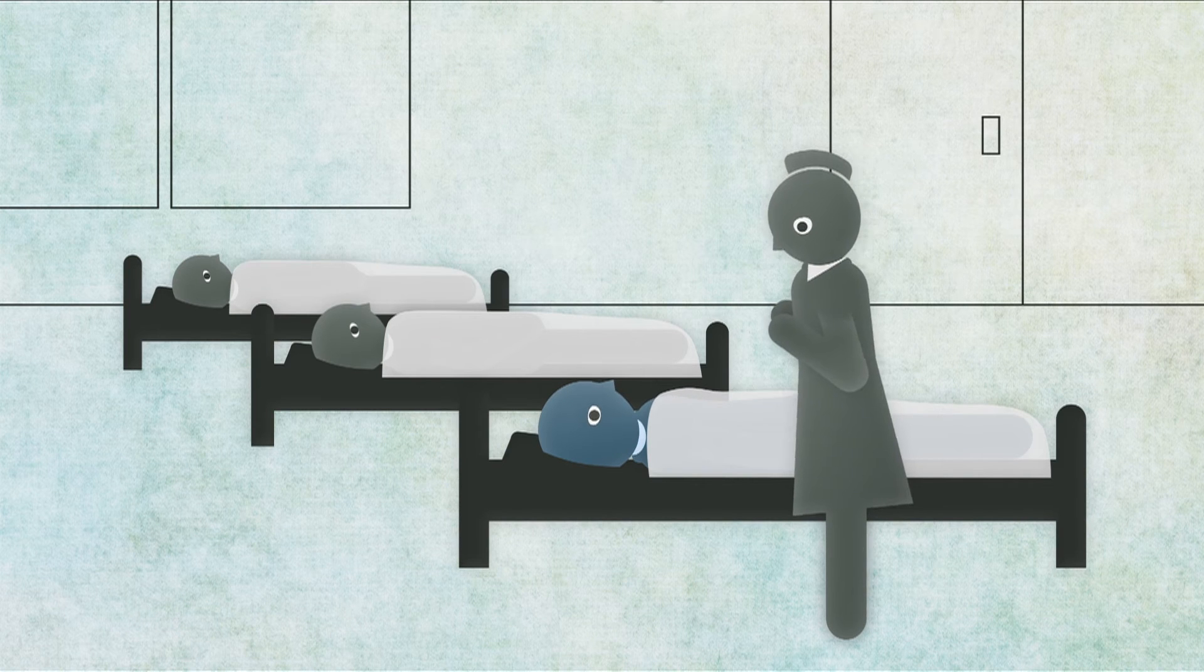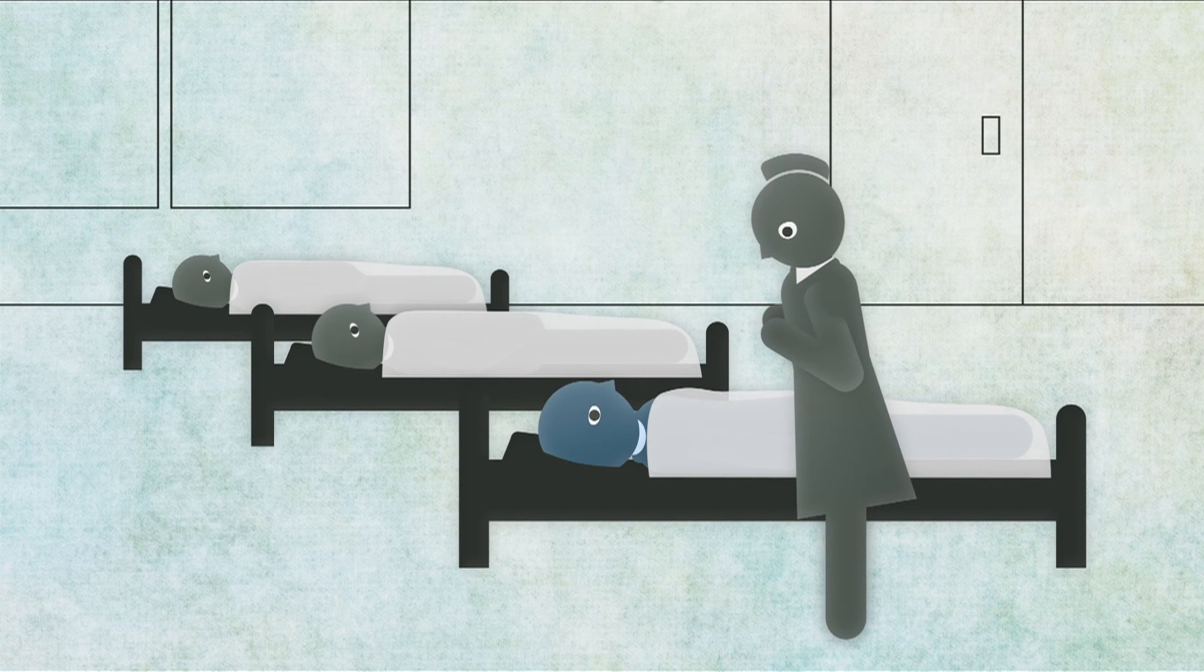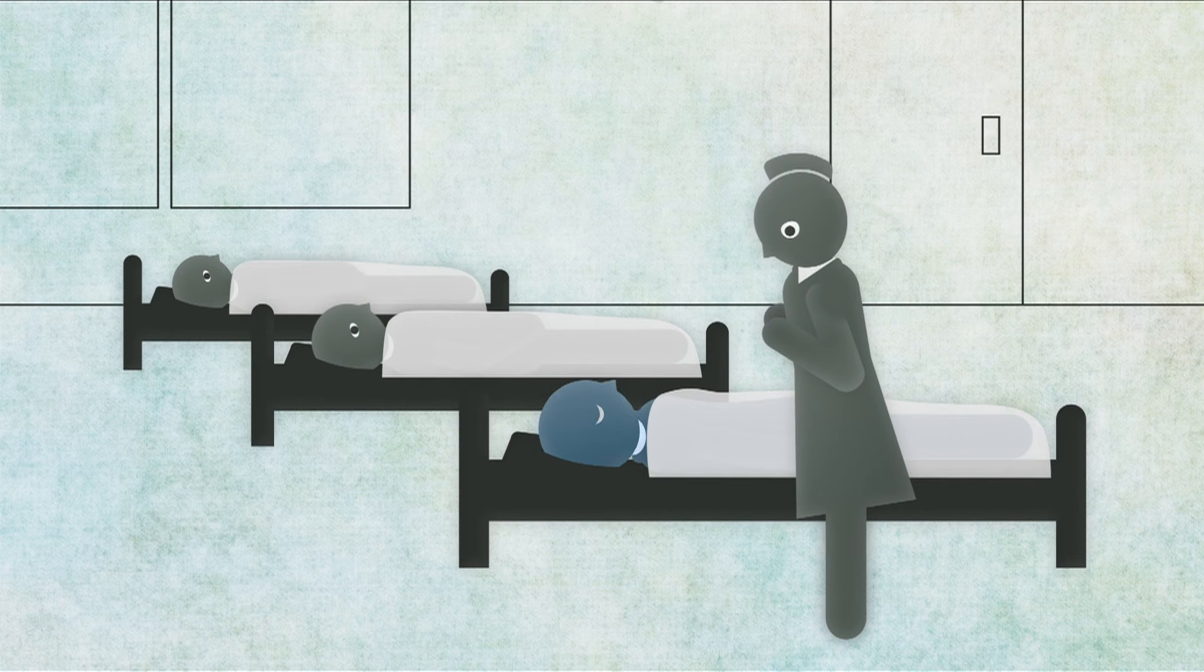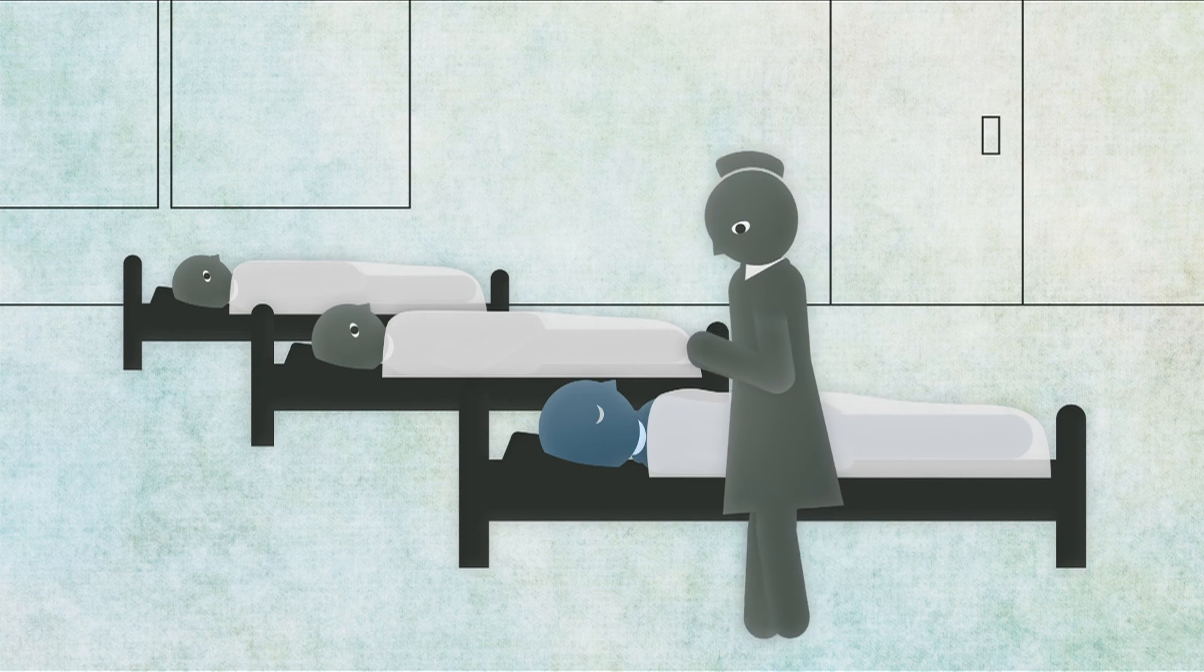Ten to thirty years later, a third of sufferers develop the chronic phase. It can be rapid, and some people die without ever knowing they had the disease.